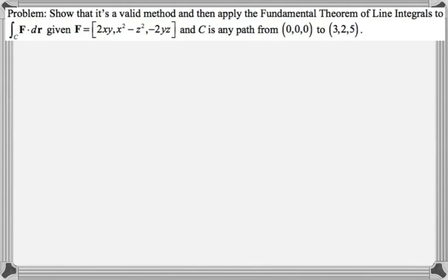Okay, in this video we are going to evaluate a line integral by applying the fundamental theorem of line integrals. It's a typical question, so we want to show that it's a valid method and then apply the fundamental theorem to the line integral. Given F, our vector field, is 2xy, x squared minus z squared, and negative 2yz, and C the path is any path going from the origin 0,0,0 to 3,2,5.